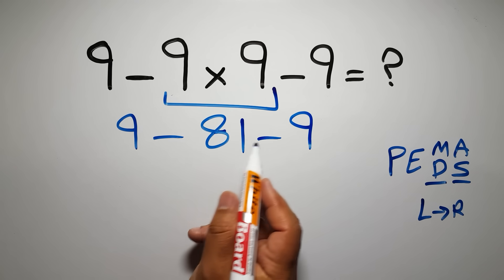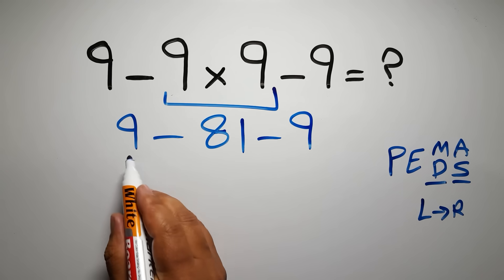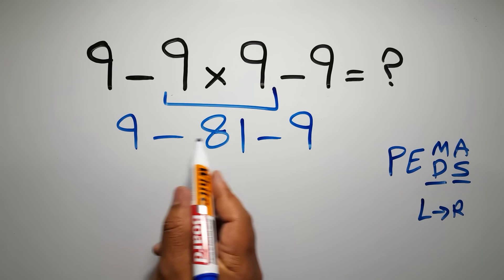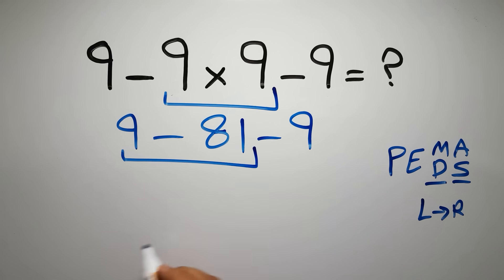So here we have two subtractions and we have to go from left to right. Okay, so first 9 minus 81, which gives us negative 72.